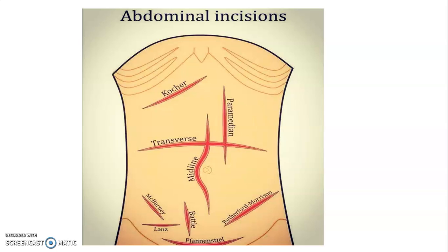That picture shows the types of incisions that can be made on the anterior abdominal wall. You can appreciate the midline incision is done at the linea alba; at the umbilicus you just go around it and continue at the midline. Paramedian is on the lateral aspect of the rectus abdominis muscle. You can do transverse incisions; there's a Kocher's incision usually done in gallbladder surgeries, a gridiron incision done at McBurney's point for appendicitis, a Lanz incision, and a Pfannenstiel incision — a low transverse incision mainly for caesarean section.